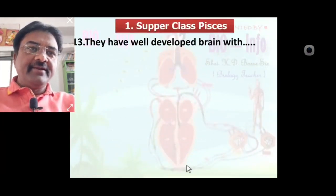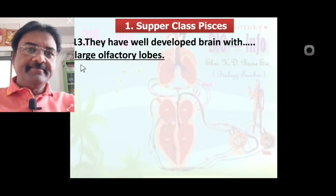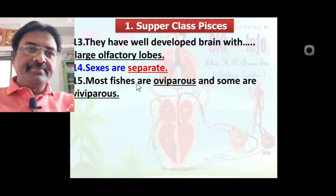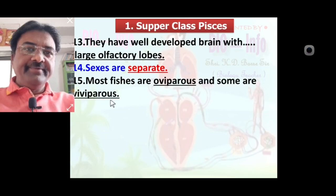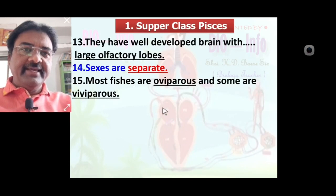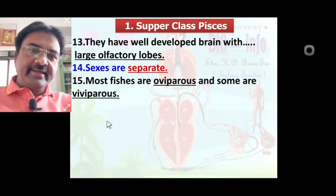Pisces have a well-developed brain with a large olfactory lobe, which is one part of the brain that is well-developed. Sexes are separated, meaning they are unisexual. Most fishes are oviparous — egg-laying — but some are viviparous, meaning they give birth to young ones.